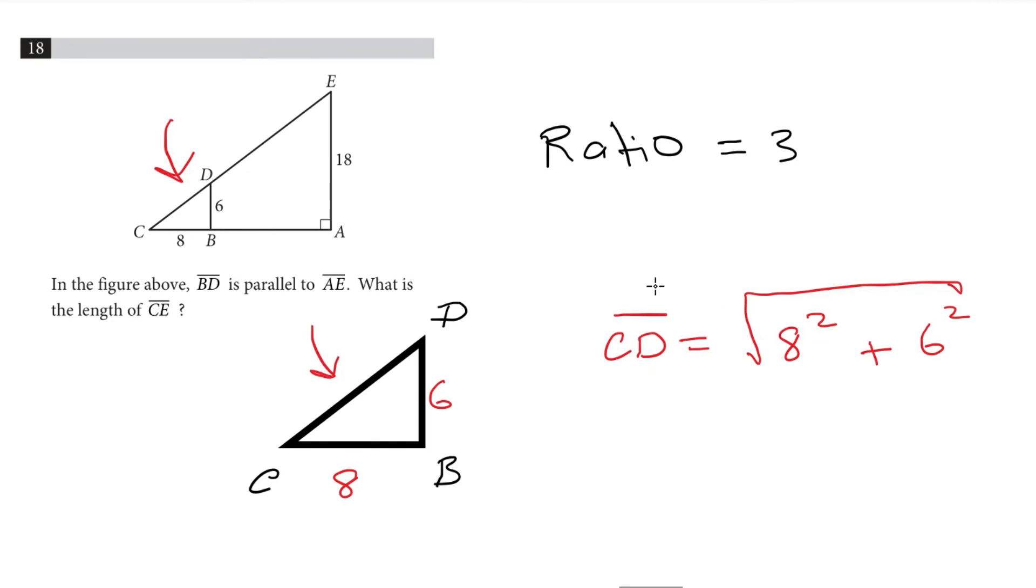Here we are trying to find the length of segment CD. So it is going to be equal to square root of 64 plus 36. That gives us a square root of 100. And square root of 100 is 10. So CD is equal to 10.